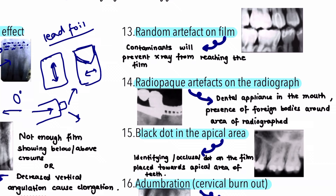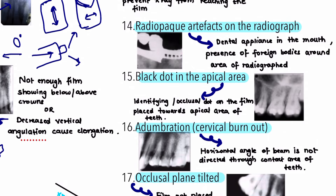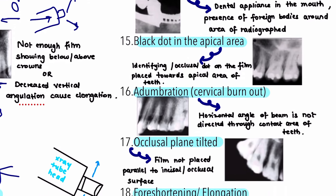The next error is radio-opaque artifacts on the radiograph. These can be ornamental artifacts casting shadows or images on the x-ray, dental appliances in the mouth, or foreign bodies in the area being radiographed — for example, contaminants of restorative material in the buccal sulcus. The correction is to always ask the patient to remove all metallic objects and ornaments prior to x-rays, gargle properly beforehand, and remove removable dental appliances such as RPDs.